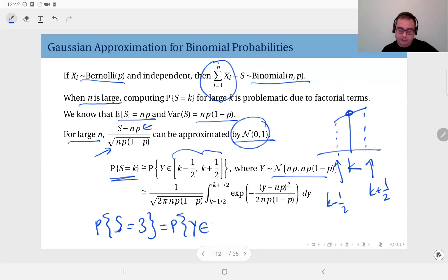So for the event let's say probability S equals three, this would be the probability that Y, this Gaussian, is in the interval 2.5 to 3.5. Or if your event is S equals 20 then its probability will be Y in 19.5 and 20.5. That is the idea.